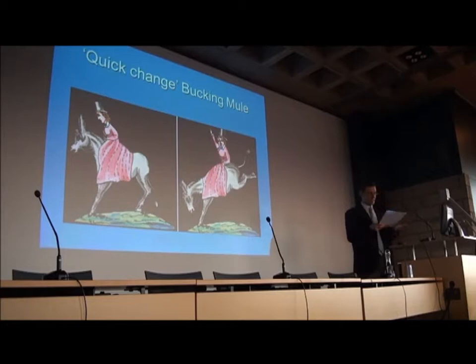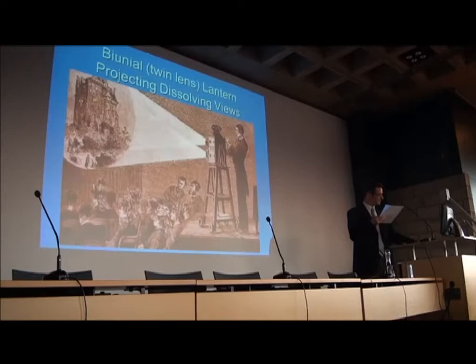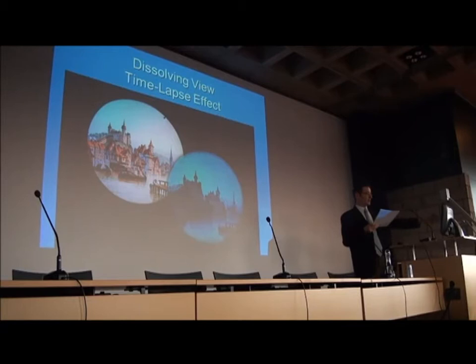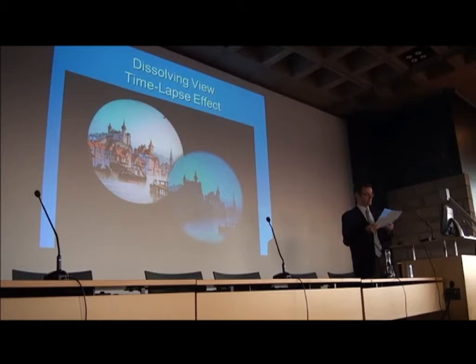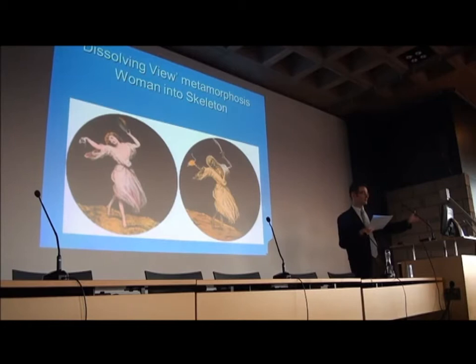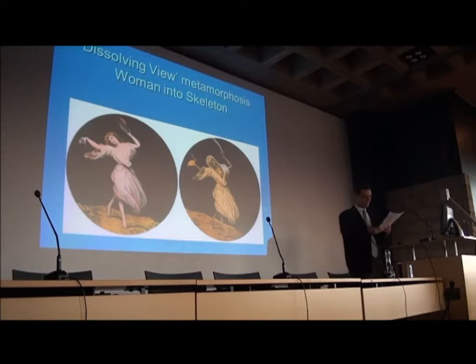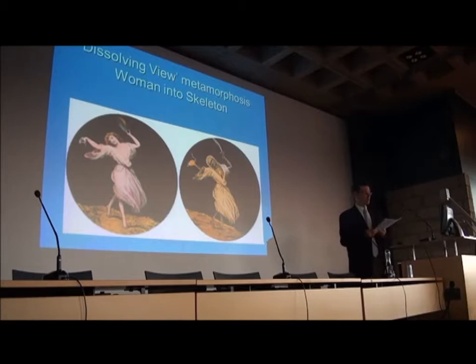Their movement was often produced mechanically from so-called slipper slides, but there was also a more sophisticated and transitional kind of effect achieved through dissolving view apparatuses. For example, it was possible to create a time-lapse effect between two slides projected on top of each other, where you would see the same scene during the day then gradually it would become night. You could also produce extraordinary surreal metamorphoses — turning a beautiful young woman into a skeleton in an instant. These dissolving views could shift through time and space, and were enhanced in cinema itself in the form of a mix or crossfade, as well as double exposure and superposition, especially for paranormal effects.